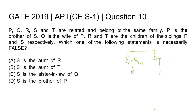Now we have to find which statement is necessarily false. Option A is: S is the aunt of R. R is the child of P, and S is a sibling of P. If S is a sister of P, then S will be the aunt of R. So this statement can be true.